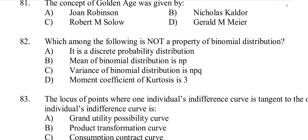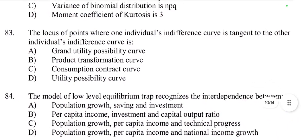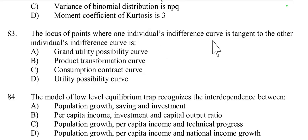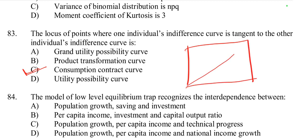Question number 83: The locus of points where one individual's indifference curve is tangent to the other individual's indifference curve is called the consumption contract curve. The consumption contract curve represents the set of allocations where the indifference curves of two individuals are tangent, indicating that both individuals are at a point of Pareto efficiency in the Edgeworth box.